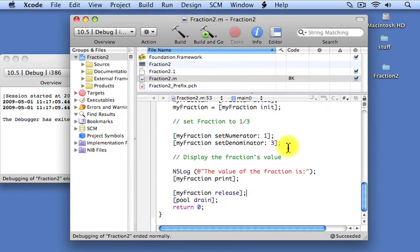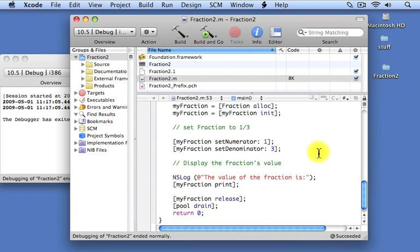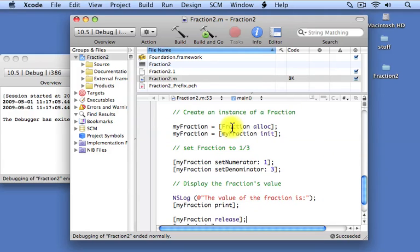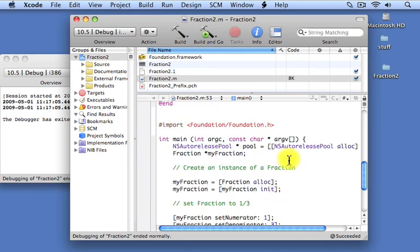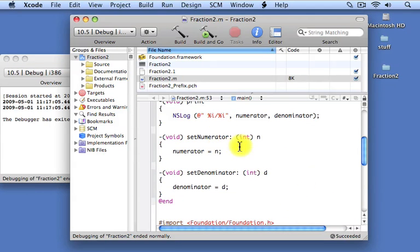Let's just trace through the execution of this program back here to make sure you understand exactly what's going on. After we allocated and initialized our fraction, we called the setNumerator method and passed it to value 1. Now let's go back to the code for setNumerator. The value 1 that gets passed to this method gets stored inside this local variable called n here, and then the method gets executed.